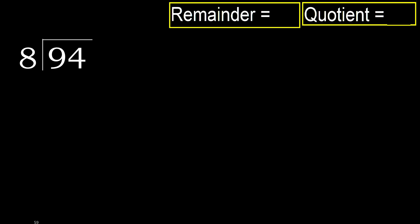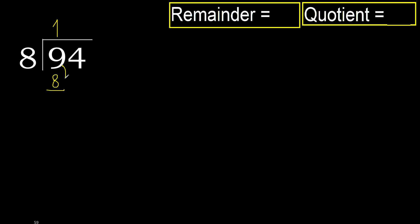94 divided by 8. 9 is not less, therefore with 9 — 8 multiplied by which number is nearest to 9 but not greater? 8 multiplied by 2 is 16, which is greater. Multiply by 1 is 8, which is not greater. 9 minus 8 is 1.